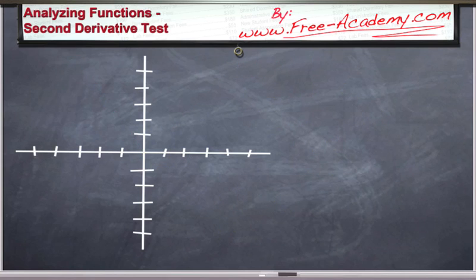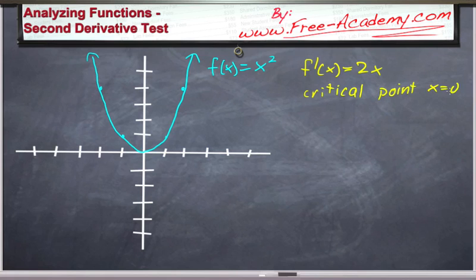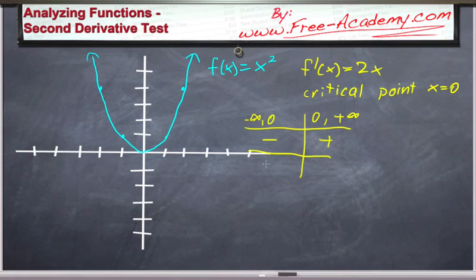Let's take off this absolute value function and bring in our friendly parabola. We can find the first derivative of our parabola — f prime of x is equal to 2x. We know that we have a critical point at x equals 0. From setting up our table, we know that we have a negative before 0 and positive after 0, so it's decreasing for x less than 0 and increasing for x greater than 0, which means we have a minimum at x equals 0. But there's another way we could have told that. If we find the second derivative, f double prime of x, we get 2.